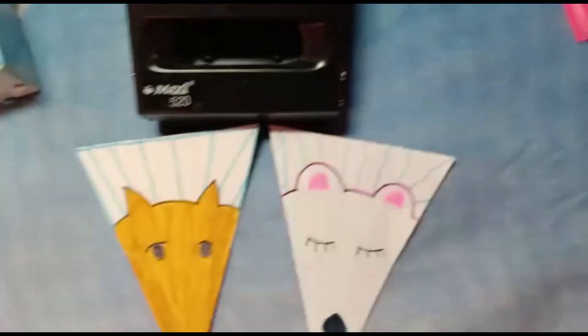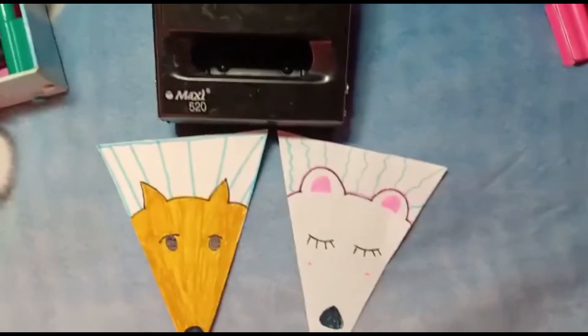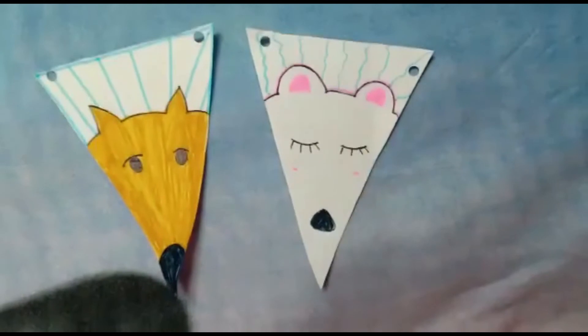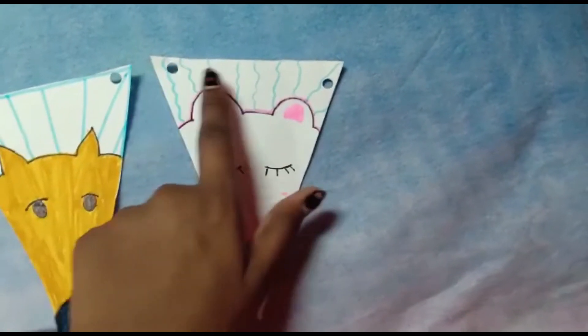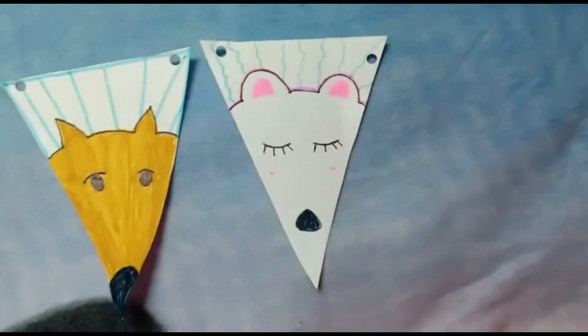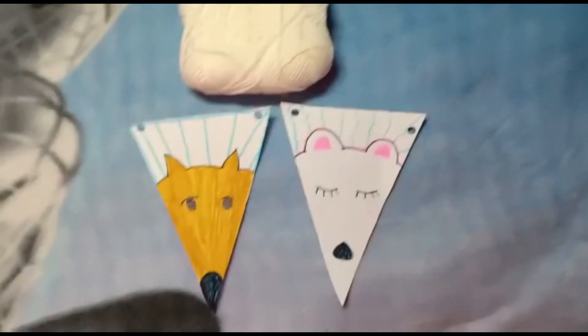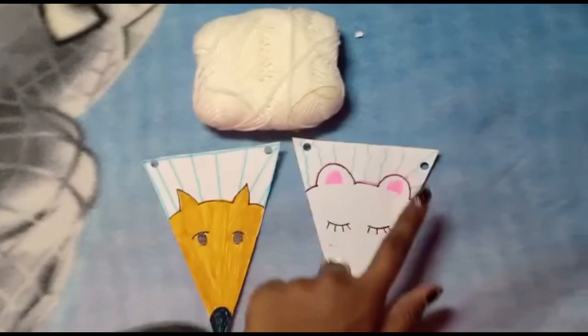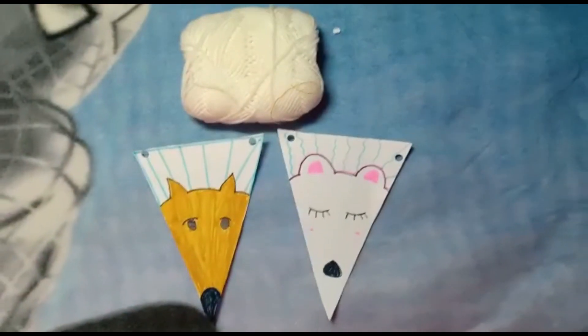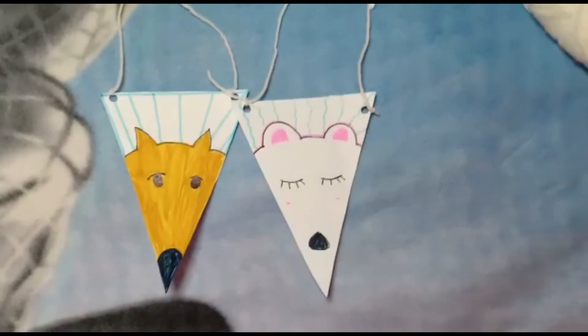Here I'm taking the punching machine. You have to punch all four sides, punch, punch, punch, punch and punch. And then here I'm taking a thread and I'm taking the amount of thread that I want and I'm going to do it for both the sides. I'm done inserting the thread.